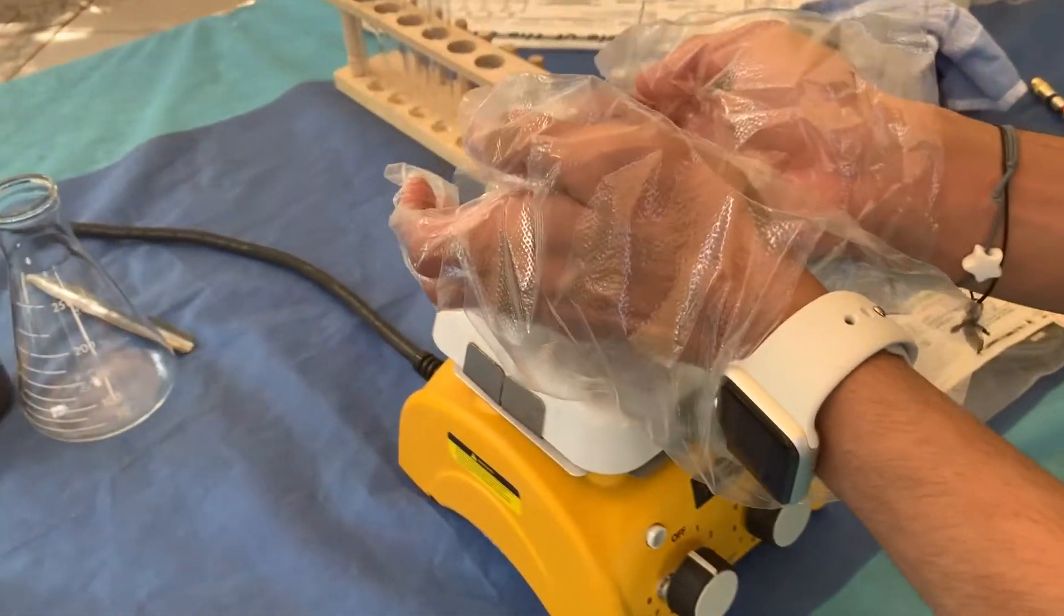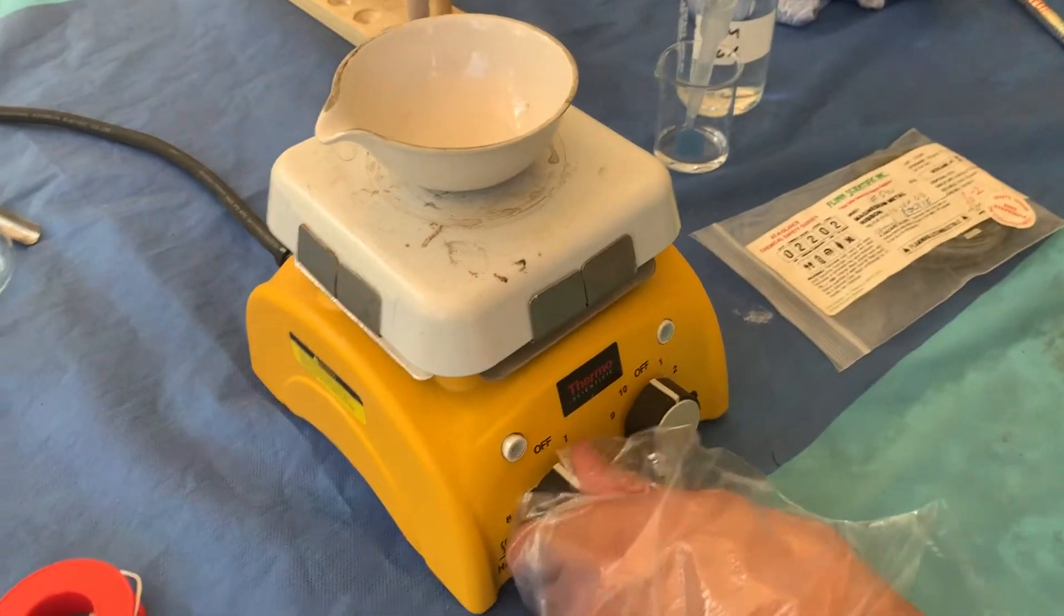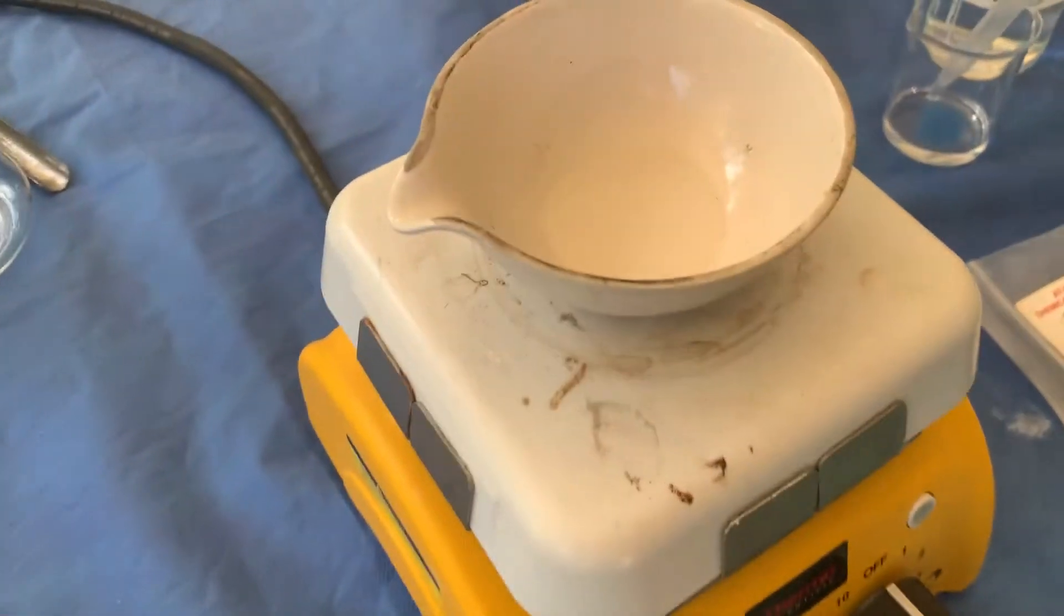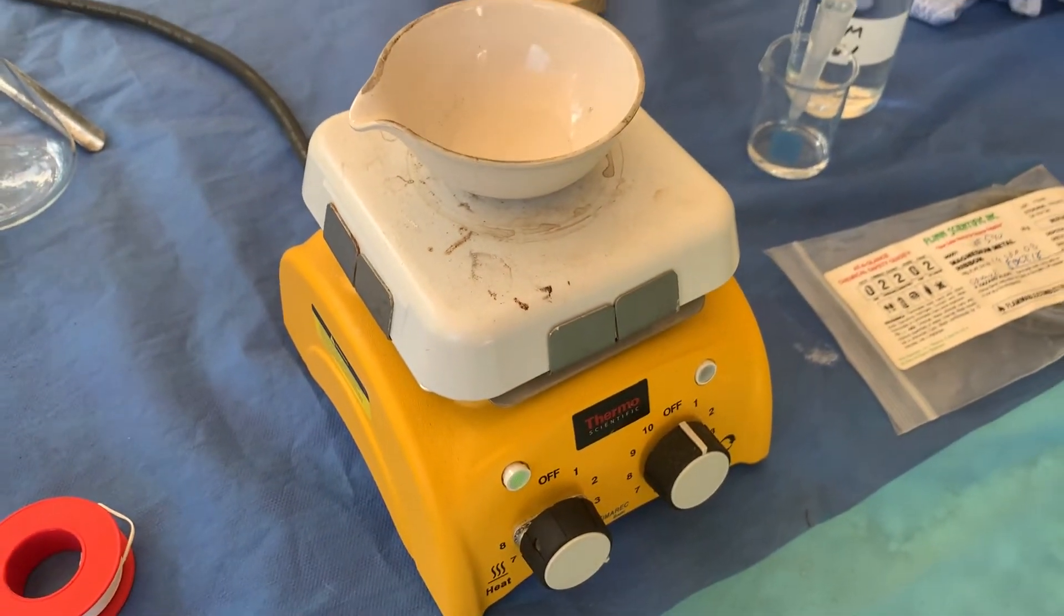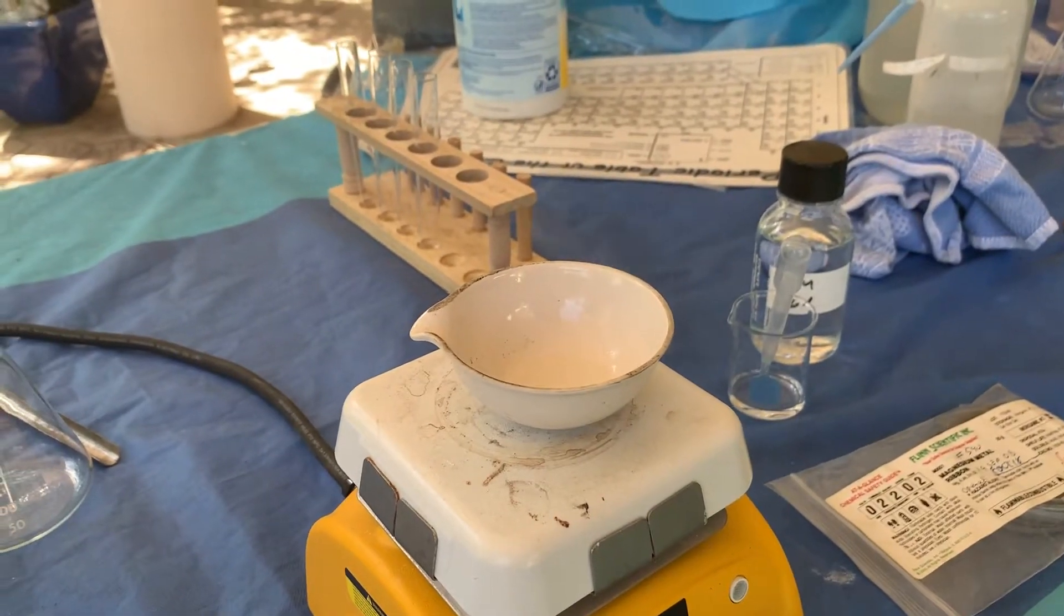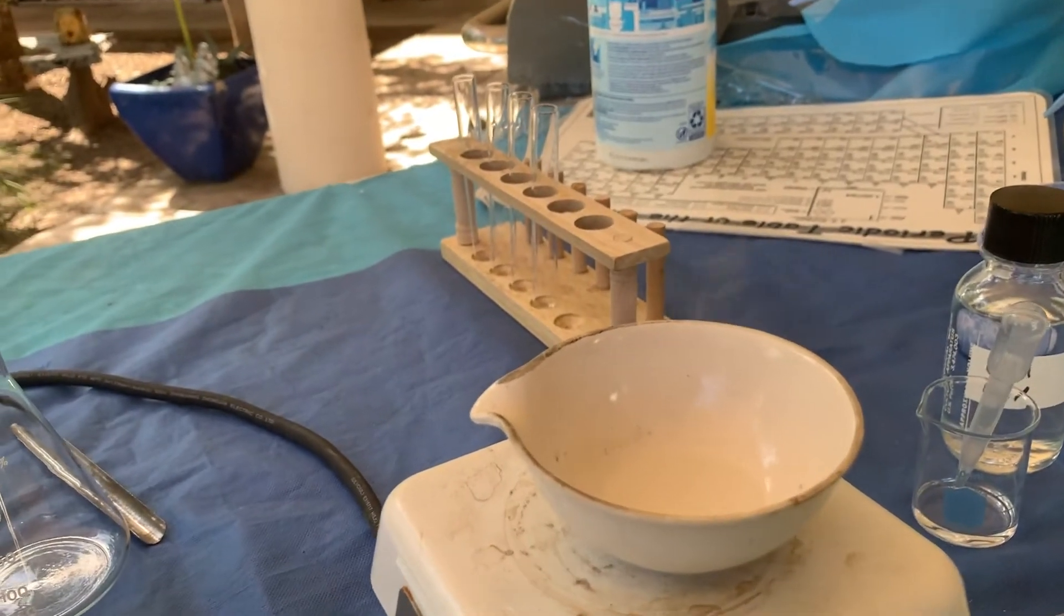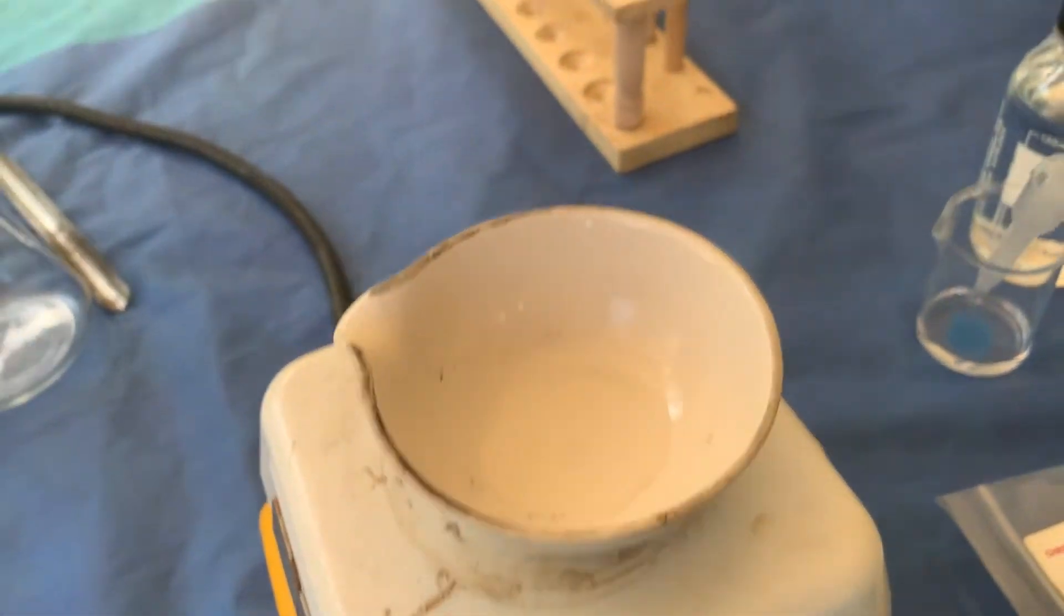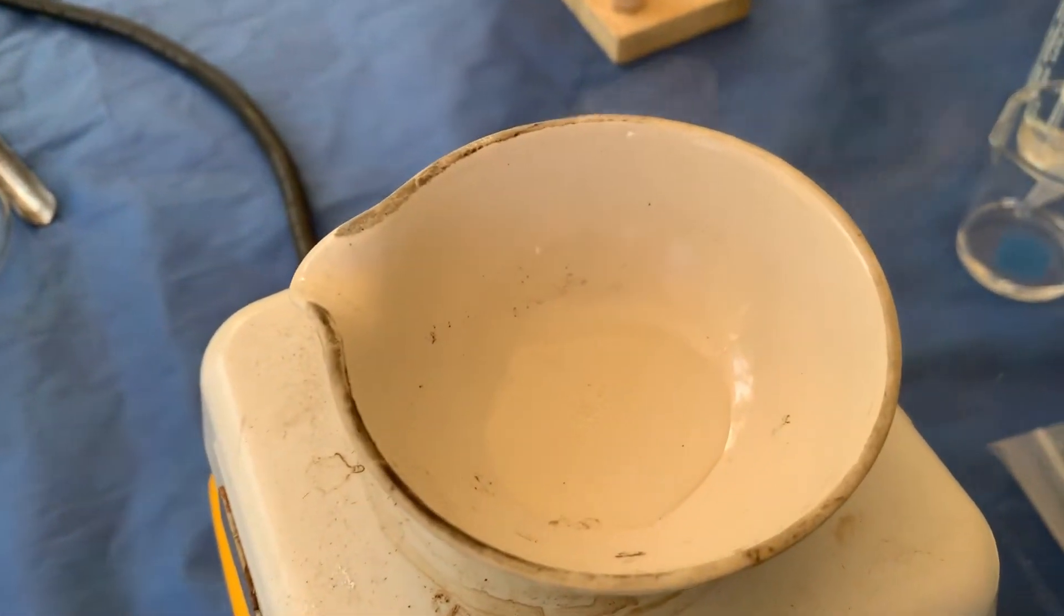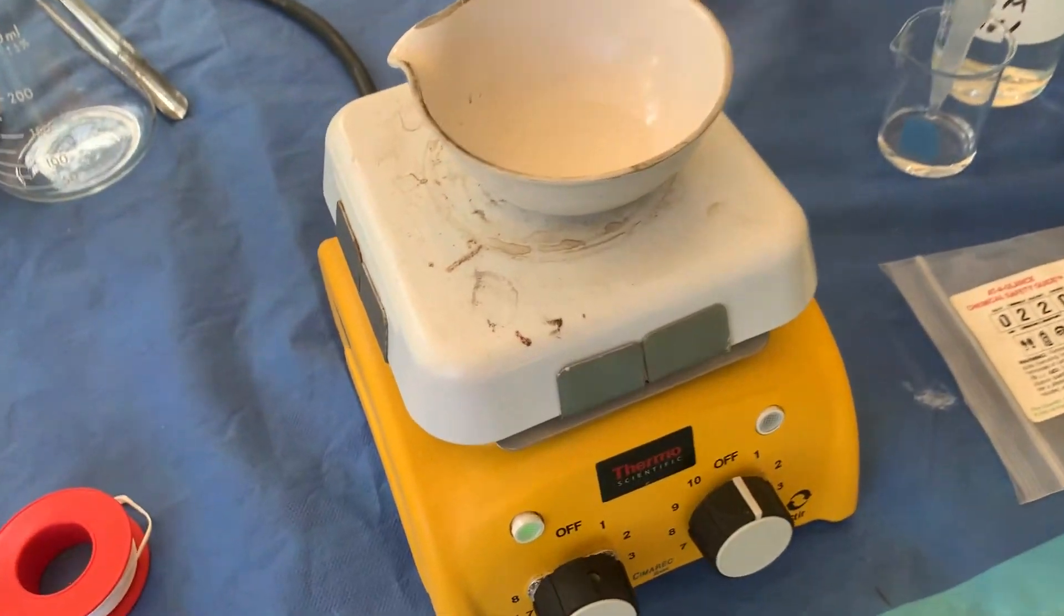So now place the evaporating dish on the hot plate and turn it on. And you want to heat it up to where this is nearly boiling. So we're going to wait for that. And then we're going to pull it off the hot plate and let it cool.